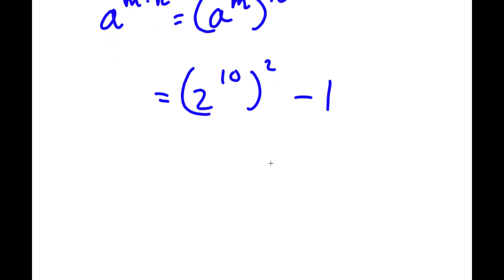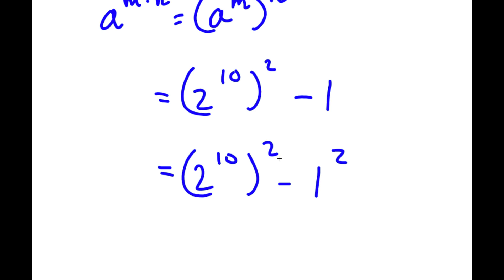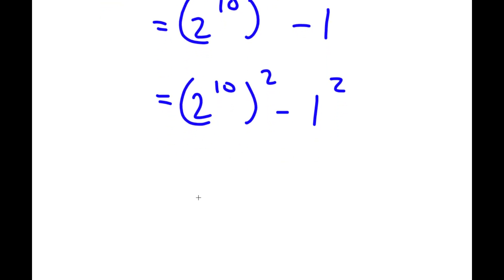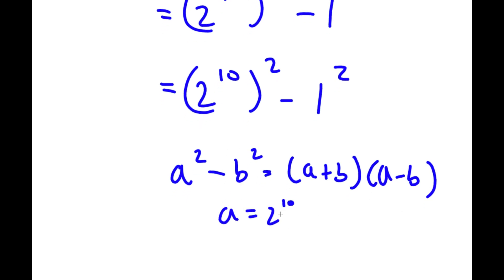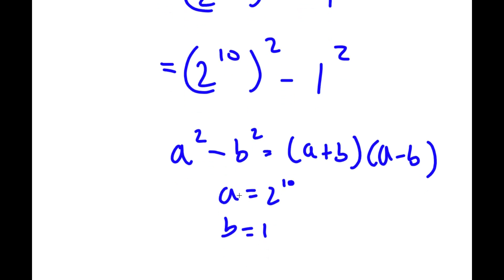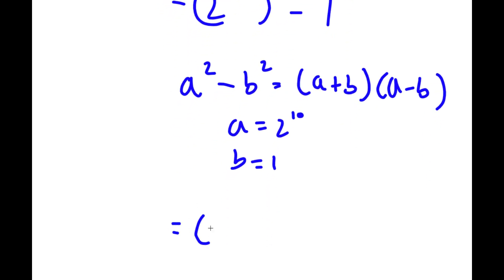Now, 1 is the same thing as 1 squared. So now I have 2 to the power of 10 to the power of 2, minus 1 to the power of 2. If I have something in the form a squared minus b squared, this is equal to a plus b times a minus b. So in this case, a is equal to 2 to the power of 10 and b is equal to 1. So now I have 2 to the power of 10 plus 1, times 2 to the power of 10 minus 1.